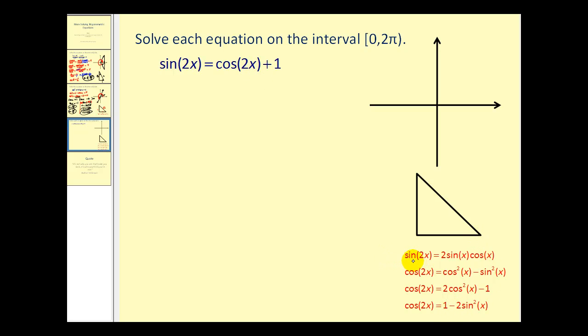Luckily, there's only one identity for sine two x. So let's go ahead and replace sine two x with two sine x cosine x. Now for cosine two x, there's three different identities to choose from. The one that stands out for me is this third one because notice we have cosine two x equals two cosine squared x minus one. Notice there's a plus one in the original equation. So those two will simplify out if I use this identity.